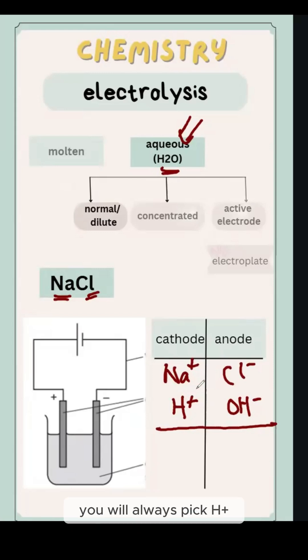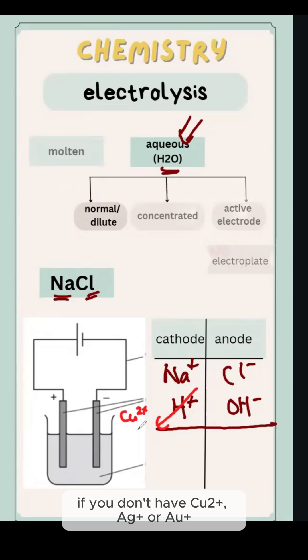You will always pick hydrogen ion if you don't have reactive metal or gold. If we don't have these three, then we will confirm pick hydrogen.